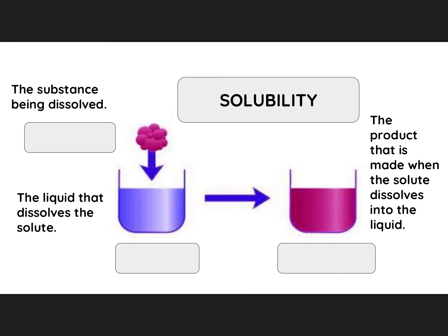There are a few terms that you need to know to understand solubility. The first term is for the substance that goes into the liquid — this substance is called the solute. The liquid that the solute goes into is called the solvent. And finally, the product that is made when the solute dissolves into the liquid is called the solution.